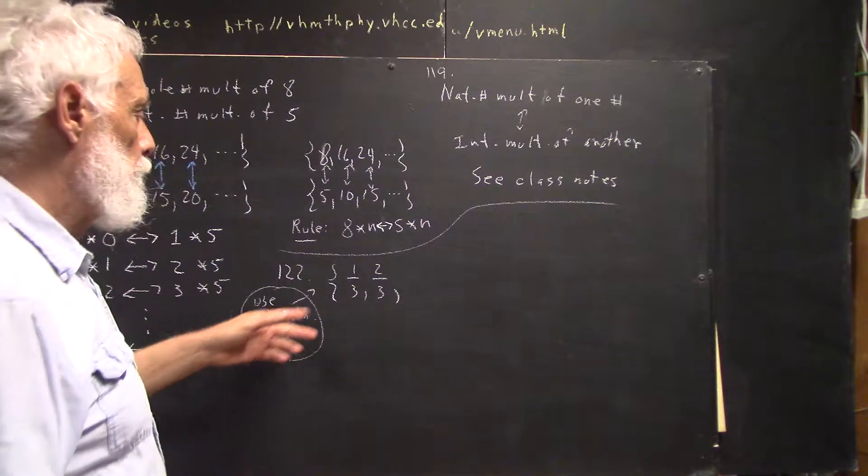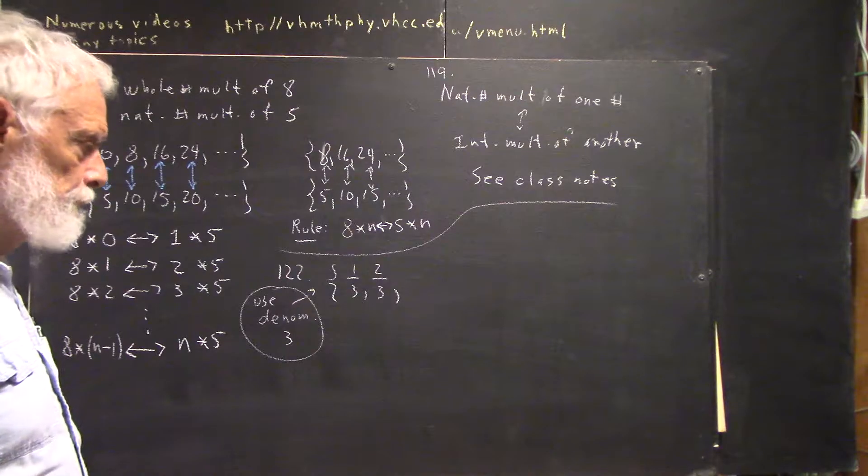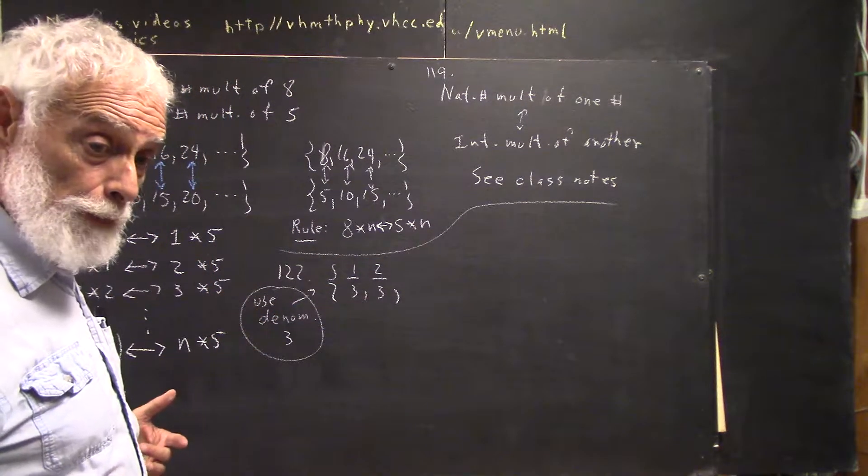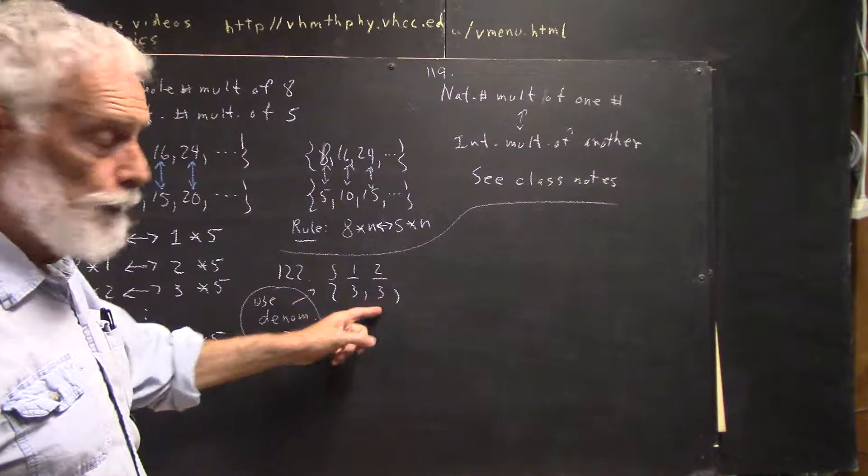For number 122, I'm going to use a denominator of 3. And what you're asked to do is list the rational numbers in lowest terms whose denominators are 3.